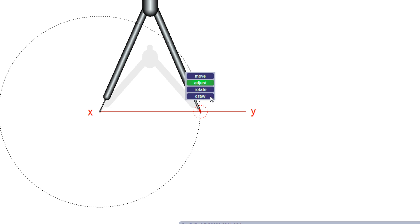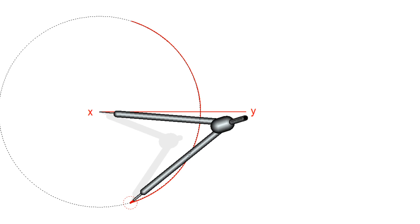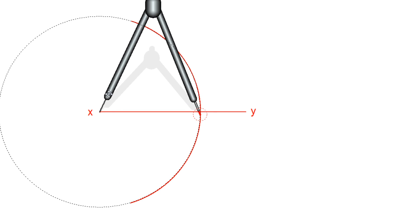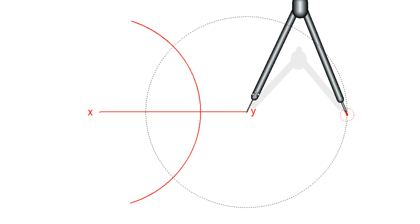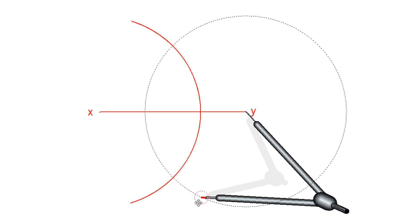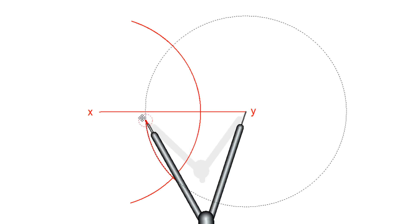Draw two arcs on both sides of XY. Rather than doing that, I can draw a single arc adjusted on both sides of the line XY. Now without changing the diameter, bring the compass to the other point Y and again draw the arc on both sides of the line XY.